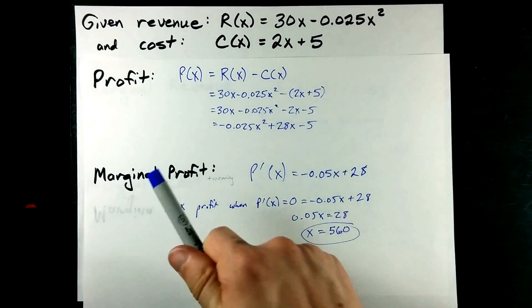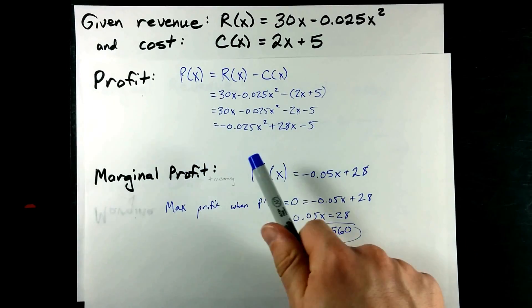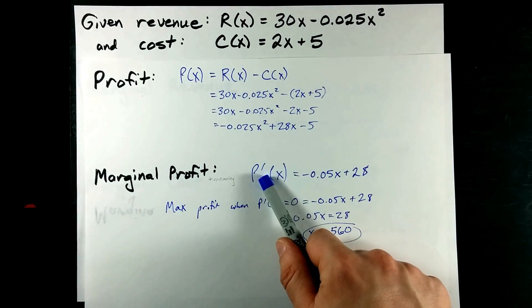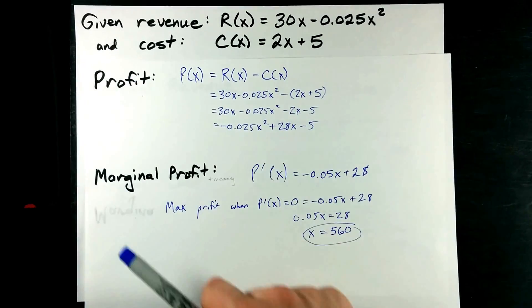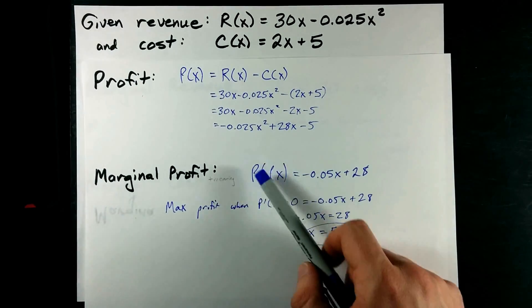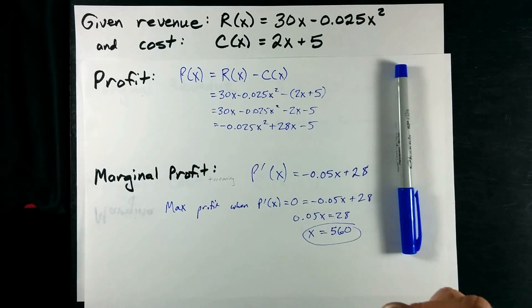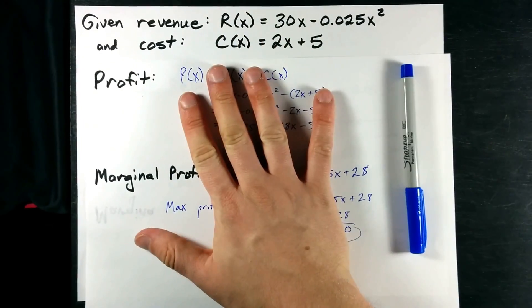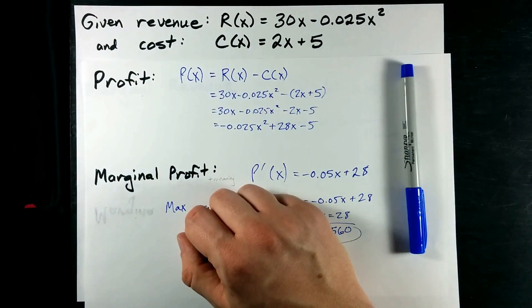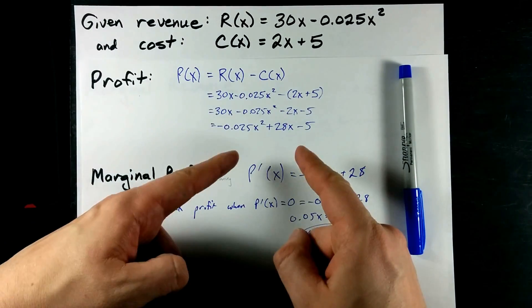Which means this is the number of units I need to sell to maximize my profit. It's marginal profit that tells us that, because marginal profit is positive if profit is increasing and negative if profit is decreasing. And that's why this marginal stuff is applications of derivative, and that's why you're a beast.